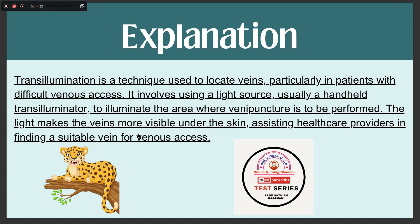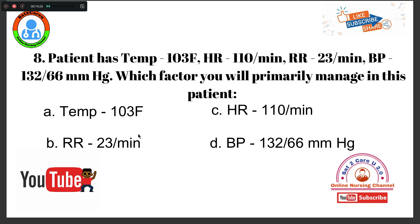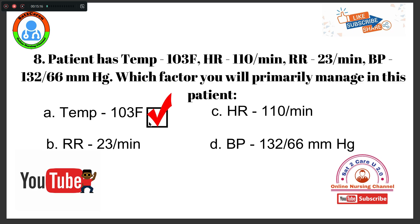Question number 8: A patient has a temperature of 103°F, heart rate of 110 beats per minute, respiratory rate of 23 breaths per minute, and BP of 132/66 mmHg. Which factor will you primarily manage in this patient? Option A, temperature 103°F. Option B, respiratory rate of 23. Option C, heart rate of 110. Option D, blood pressure of 132/66. The most abnormal parameter here is the temperature. The right answer is Option A, temperature.